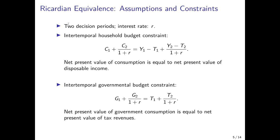To illustrate this argument, we need at least two time periods — today and the future — and an intertemporal price, which is the interest rate, with which we can shift resources over time. Households have an intertemporal budget constraint: they can consume today and in the future, and future consumption must be discounted to today. The left-hand side is the net present value of consumption, which must not exceed the net present value of disposable income — income minus taxes today, plus discounted disposable income in the future.